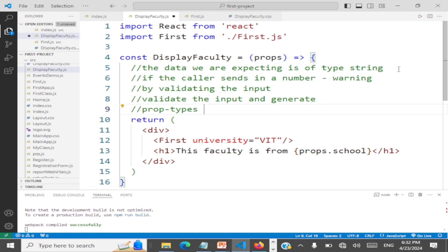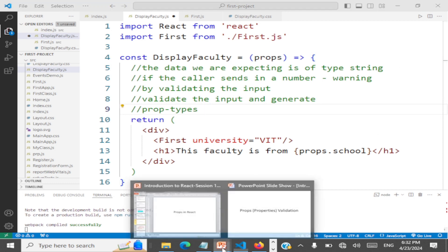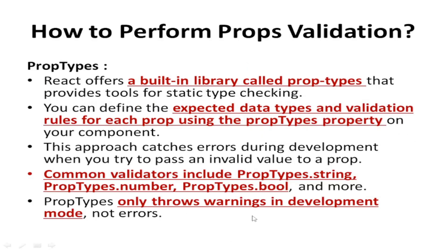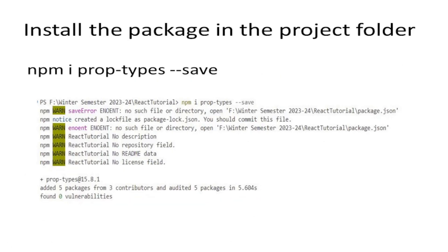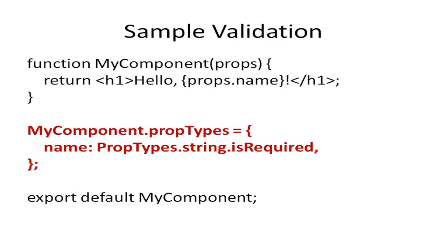We should download and install prop-types first. The command is: go to your project folder and run 'npm install prop-types'. This package we are going to use to write some validations for our input. Let's see how to write validations with an example.